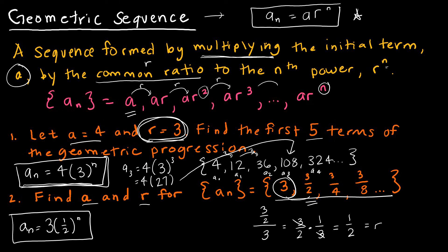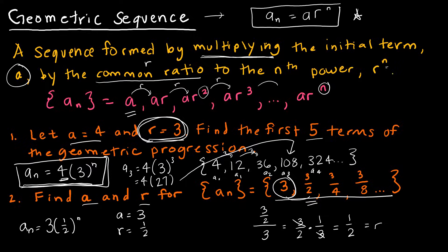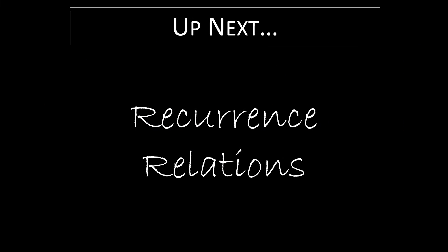Just to be clear: when I write it like this, only the r value — the common ratio — is raised to the nth power. The initial term a is not raised to the nth power. So in the first geometric example, the 4 is not to the nth power; only the 3 is. In this example, only the 1/2 is to the nth. So to summarize: a = 3 and r = 1/2. Up next, we're going to explore recurrence relations in a lot more detail, and hopefully this video gave you a good idea of the difference between a recurrence relation and an explicit definition.